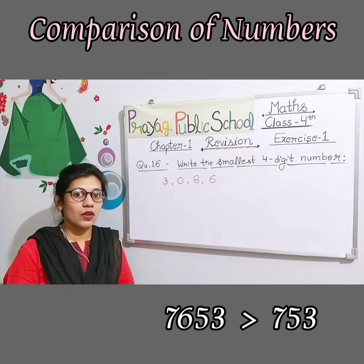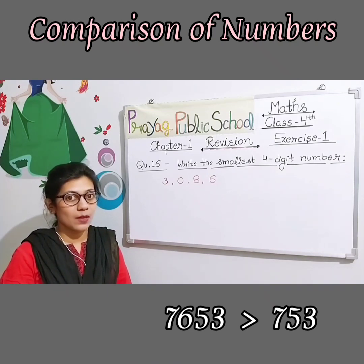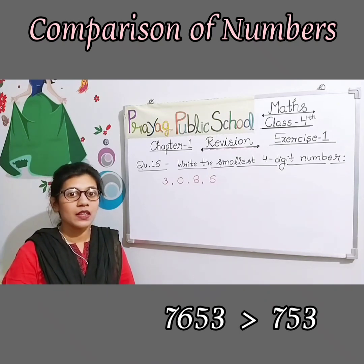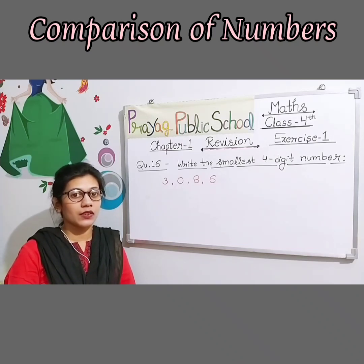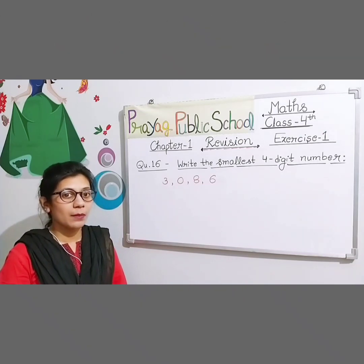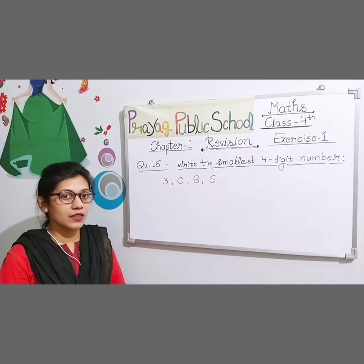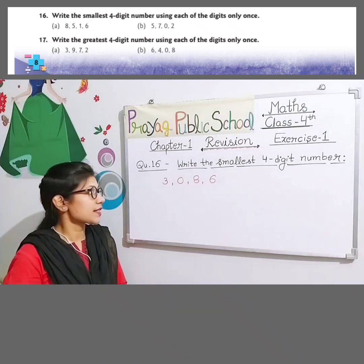Ascending order means small to bigger — you write the smallest number first and the last number is the biggest. Descending order is just the opposite — biggest to smallest, we call it decreasing order. Clear? So this is based on our next question. Open your maths book, page number 8, question number 16.